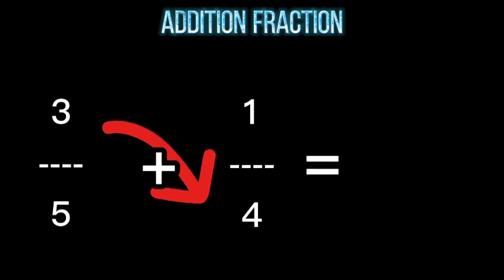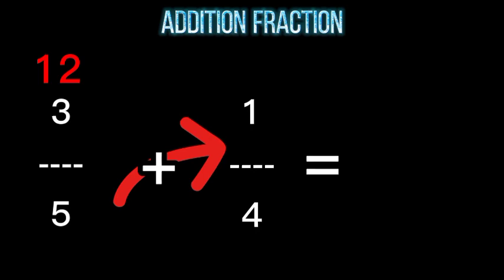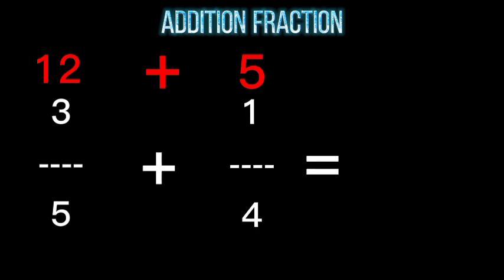For addition fraction, we need to cross multiply 3 and 4, and it gives us the answer of 12. 5 times 1 gives us the answer of 5. Next we will add 12 and 5, and it gives us the answer of 17.